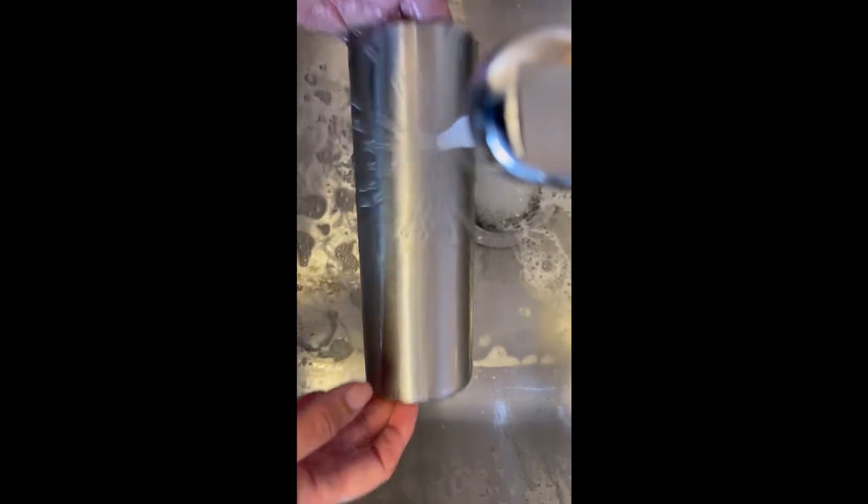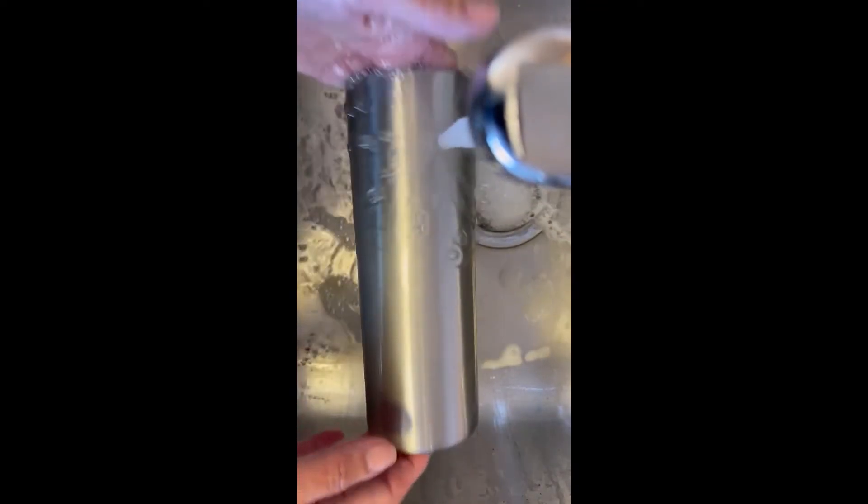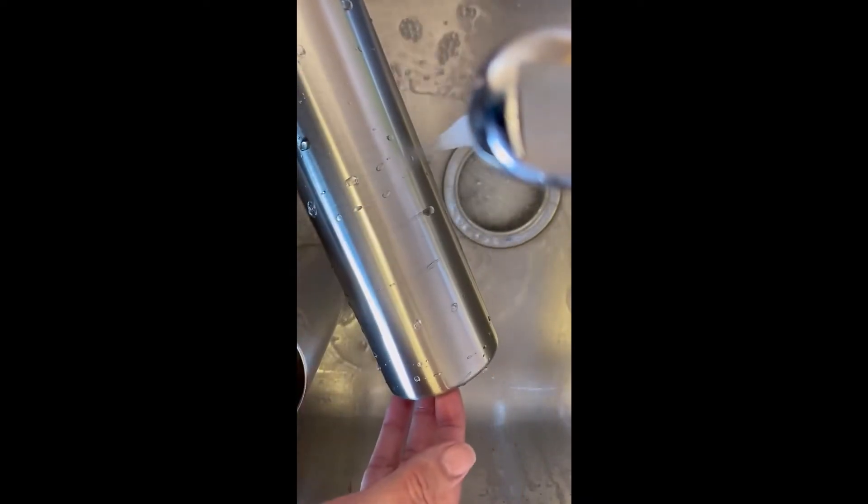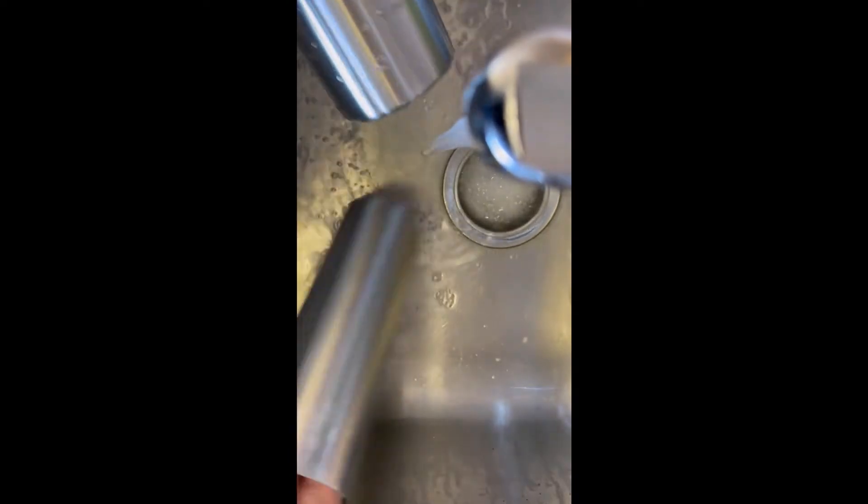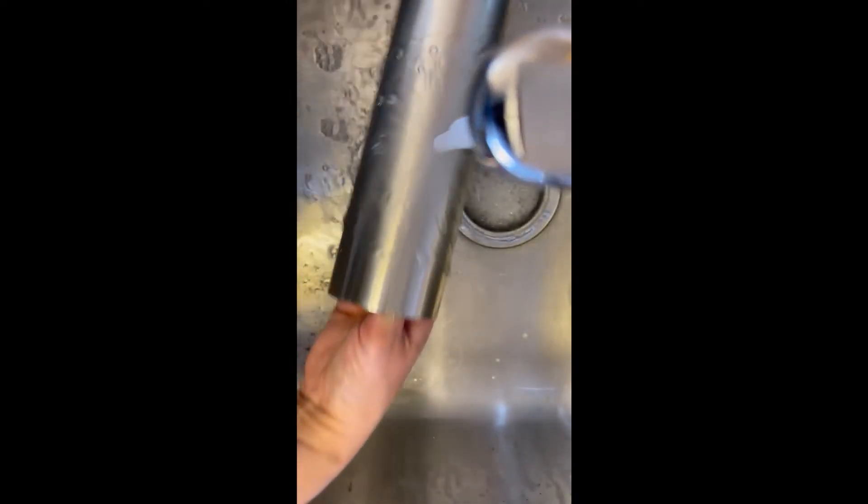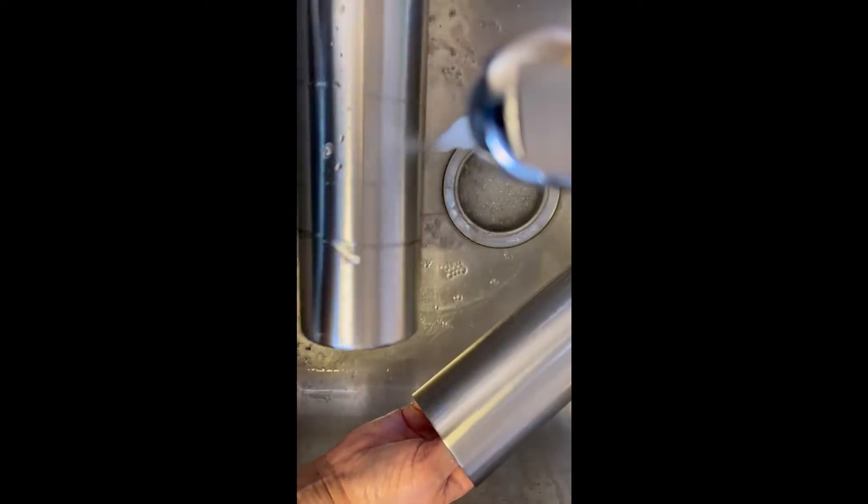Now we'll see if it passes the water test. Ready? You don't see any of that beading going on whatsoever. It's sheeting right off the tumbler. Okay, so for comparison sake here's another brand new tumbler. You see how it beads? And then if it's prepped it doesn't happen.